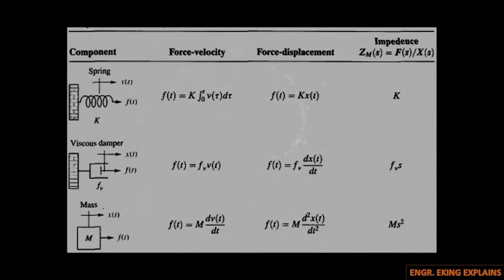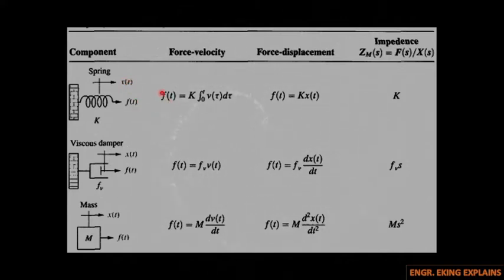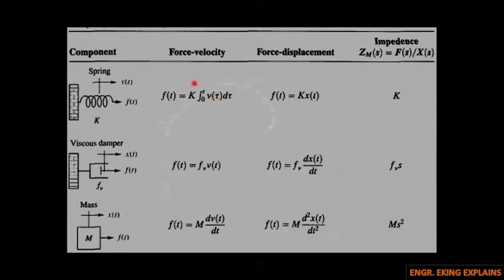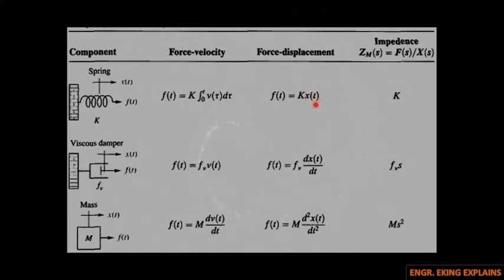First we have a spring. We have x(t) here. The force-velocity relationship is f(t) = k times the integral of v(t) d-tau, where v(t) is velocity and tau is the period or total time of travel, with limits from 0 to t. For force-displacement, f(t) = k·x(t), and the impedance is just the spring constant k.